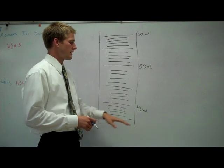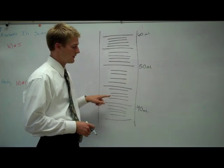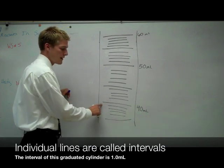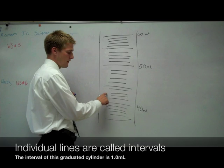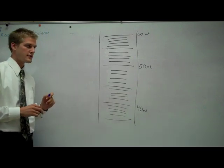This graduated cylinder goes by marked graduations of 10 milliliters, and then individual graduations of 1 milliliter. So, this is 40 milliliters, 41, 42, 43, 44, 45 milliliters. It's single graduations.